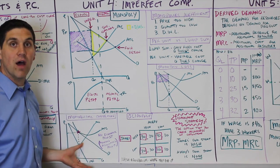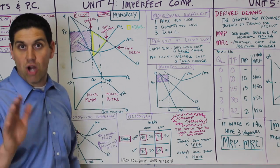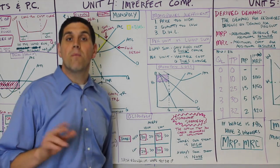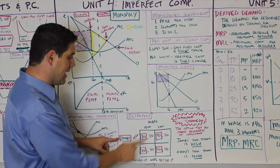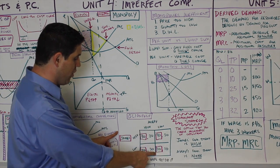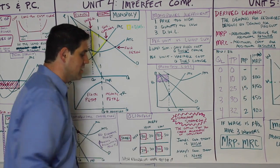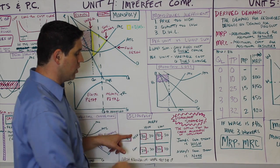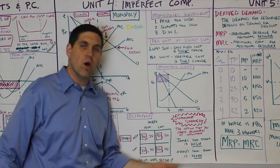The other concept is oligopoly. The AP test might ask about a colluding oligopoly, which is a cartel — essentially just a monopoly — or they might ask a game theory question about Nash equilibrium or dominant strategy. A dominant strategy is what you should do regardless of what the other firm does. In this example, James will always price high because those options are better than anything else. That's his dominant strategy. Avery, however, doesn't have a dominant strategy — sometimes she goes high, sometimes low.